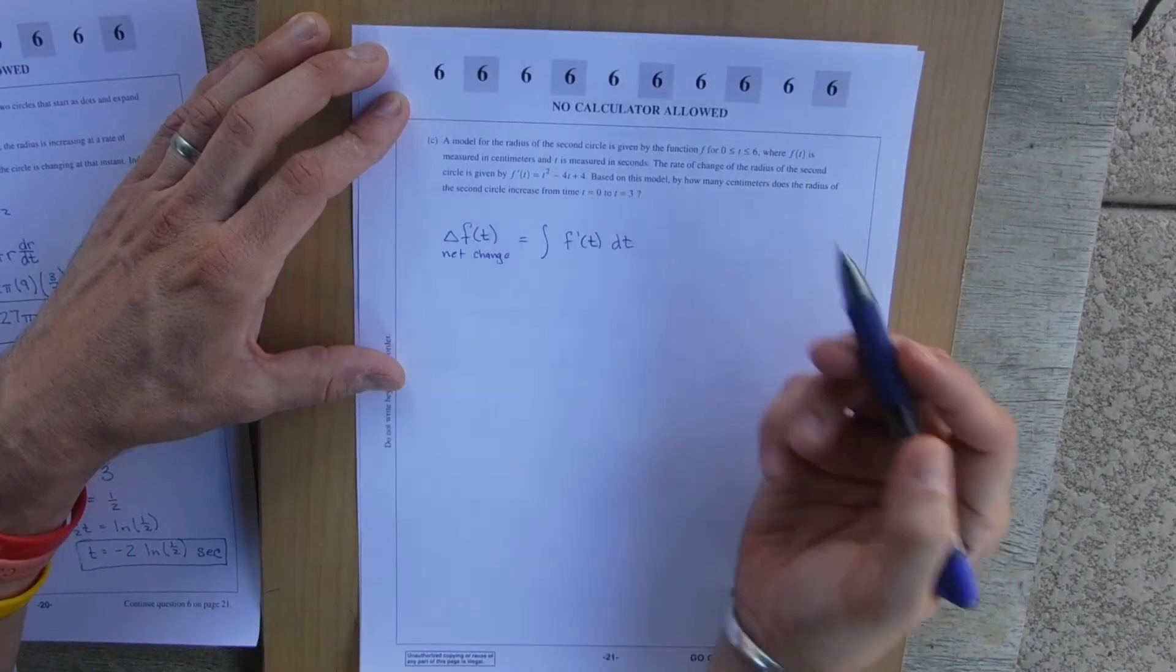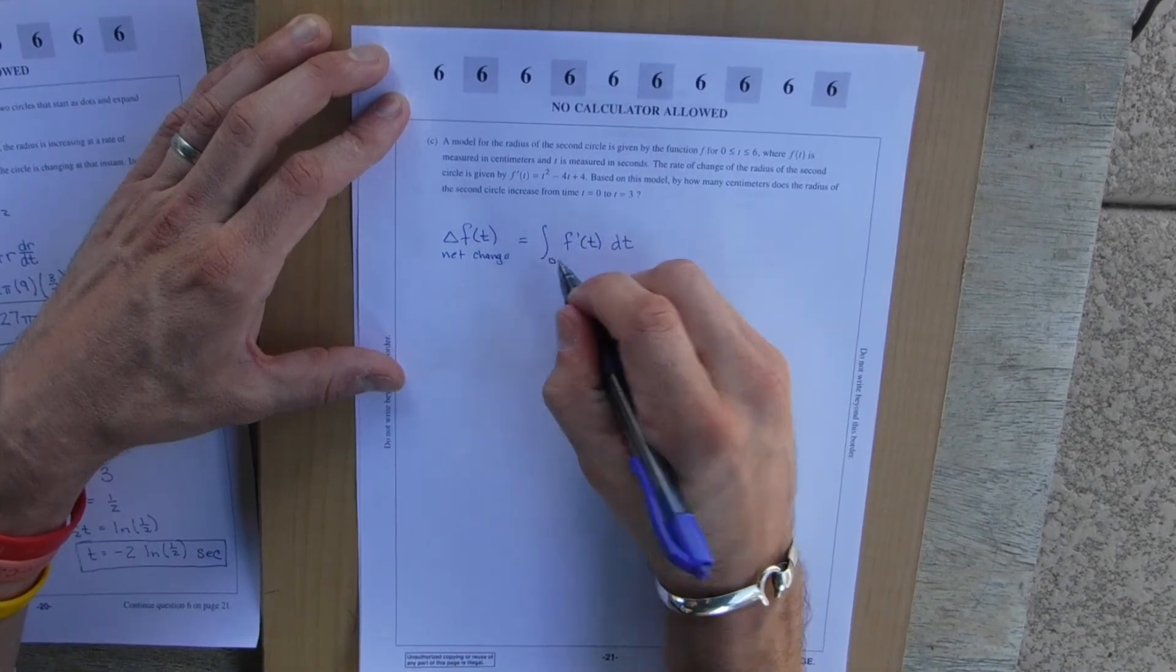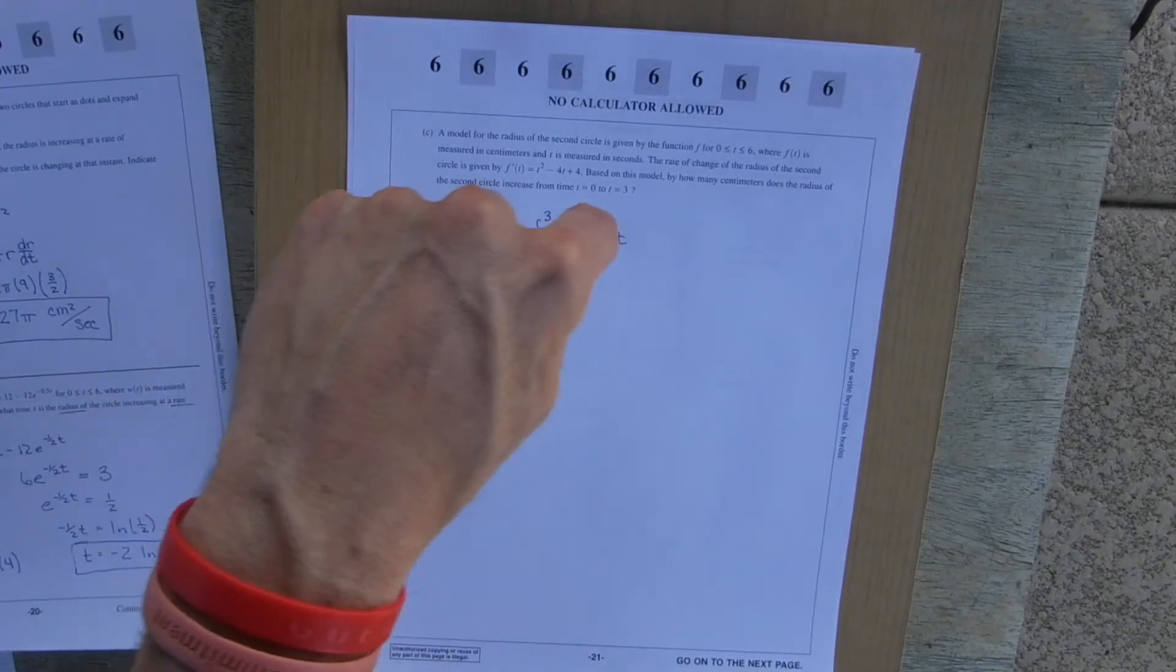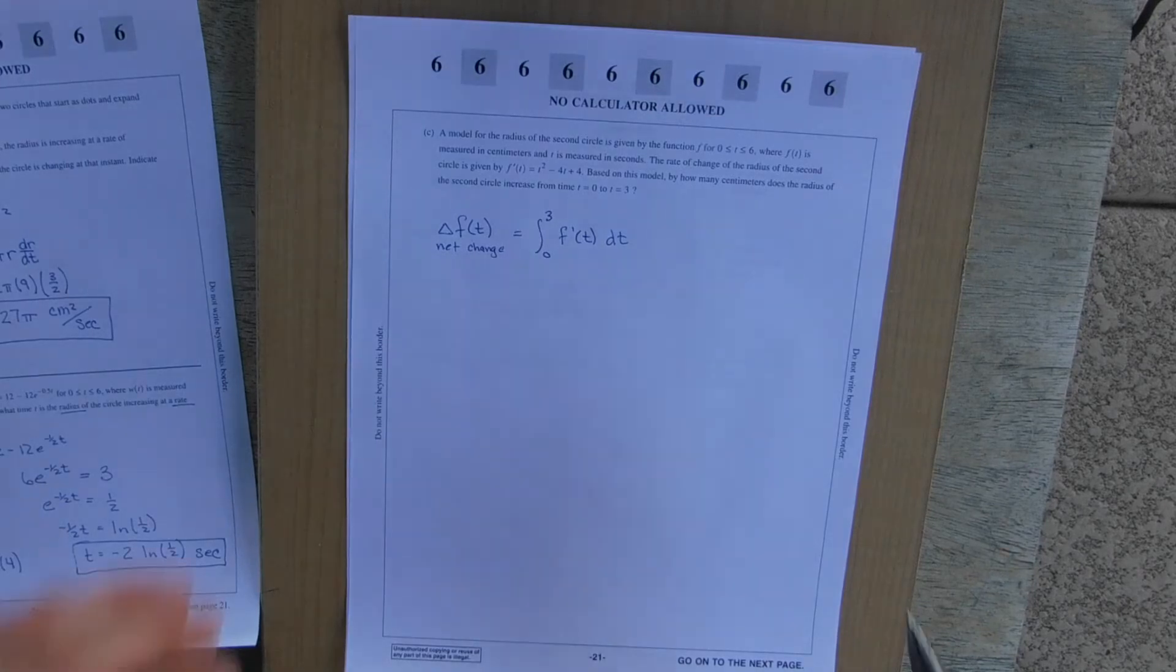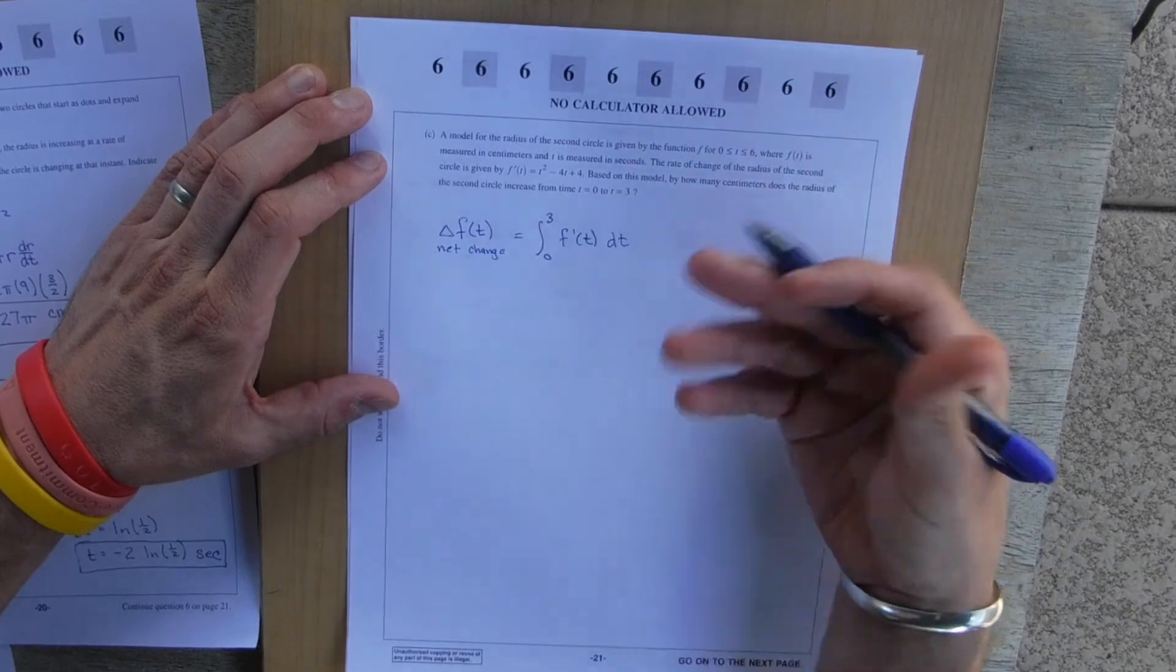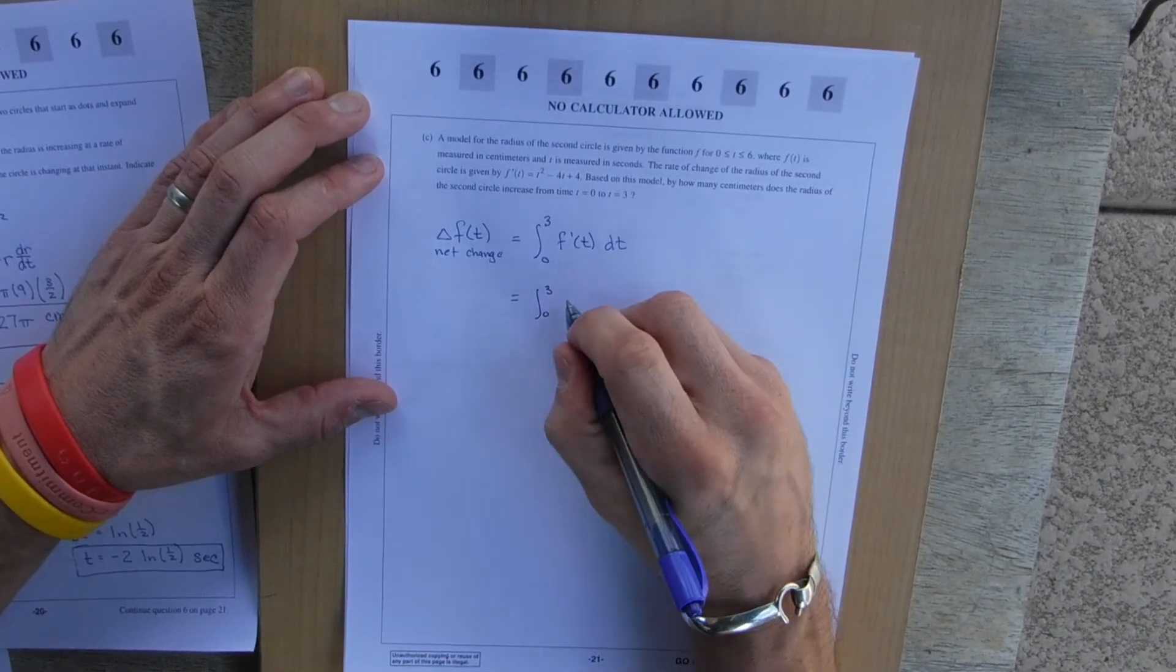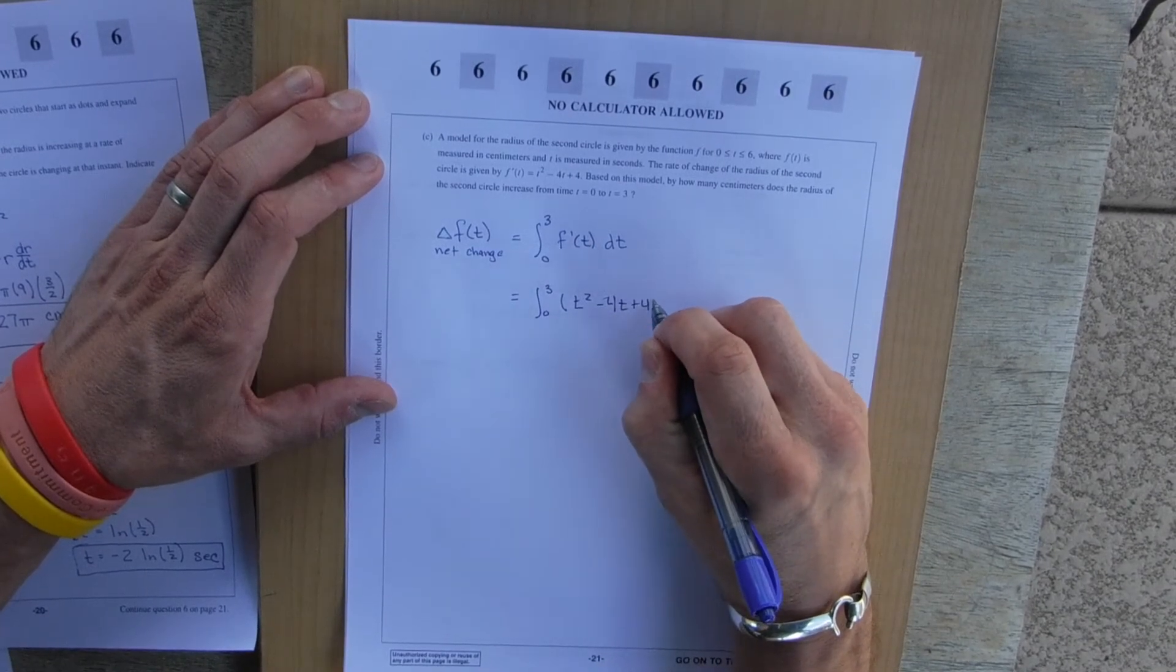Wow, how fortuitous that this is kind of falling into place. So if I want to know from 0 to 3 seconds, that's where I define my integral. So this will give me the total change in centimeters by taking an integral of its derivative, which they give me. So this is exactly going to answer how many centimeters does the radius change or increase. Alright, well, let's find out.